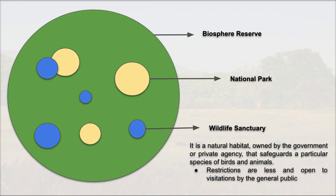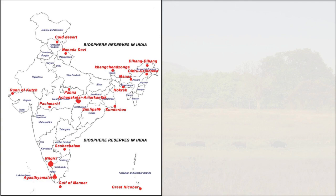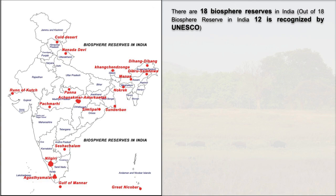Now we will move on to biosphere reserves in India. There are 18 biosphere reserves in total, and of these, 12 are identified within the UNESCO MAB program. This MAB program is basically an intergovernmental initiative with international focus, in which local and central governments increase conservation efforts, and the reserves become of national importance.